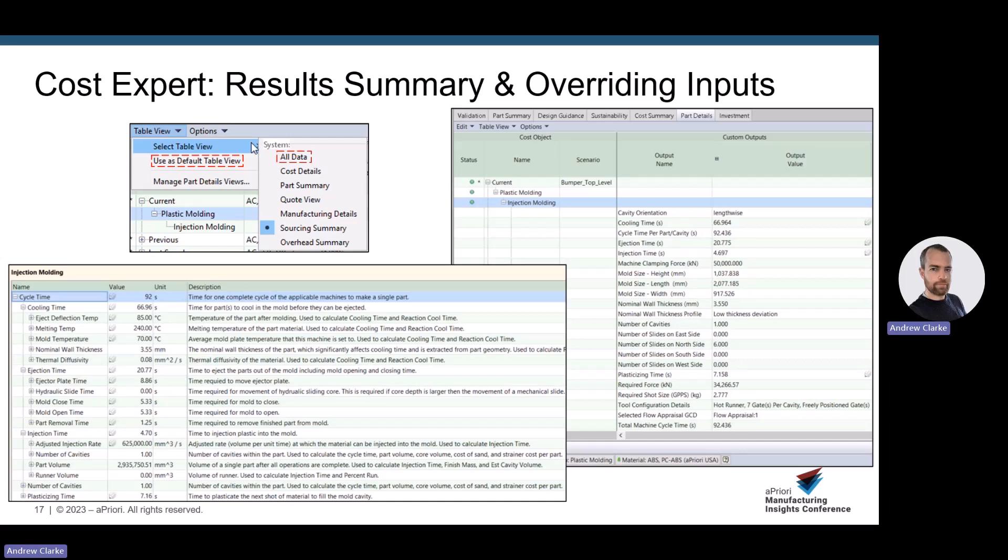Now that we're confident in the quality of the calculations, I also want to share some other features that offer total control, especially for expert users. I recommend any expert user set the part details default table to all data. This gives you the entire suite of outputs from Apriori and allows you to interrogate them thoroughly. The custom outputs give the user a snapshot of the most important process specific results.